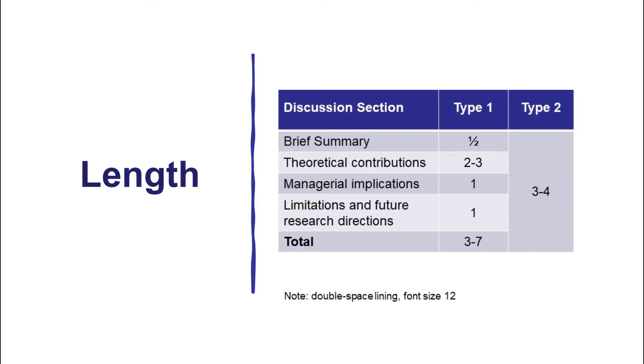For type one, now let us put this also into relation. The first part, the brief summary, would be short. Maybe just half a page. Then, the theoretical contribution would be the most important one. So, you would spend the most time and also the most space for it. So, that could be easily two or three pages long.